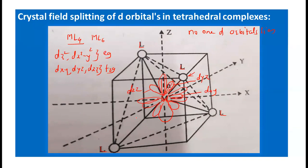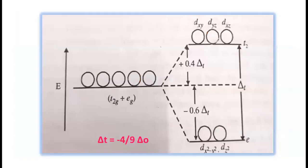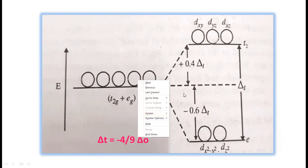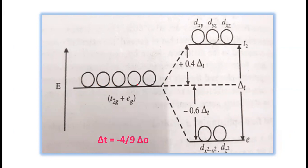Those orbitals more affected by the surrounding ligand field will have their energy increased, while those less affected will have their energy decreased. Therefore, the five d orbitals cannot remain degenerate — they split into two groups. In the splitting energy diagram for the tetrahedral complex, the five degenerate d orbitals split in the presence of the ligand field into T2g and Eg groups — triply degenerate and doubly degenerate, respectively.